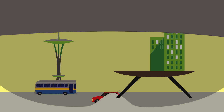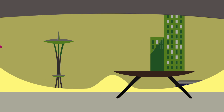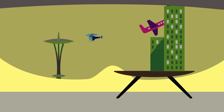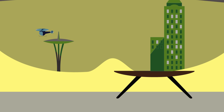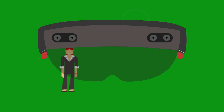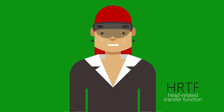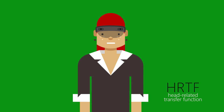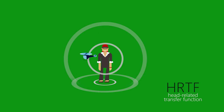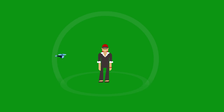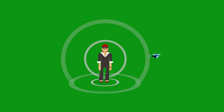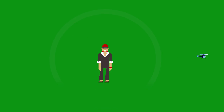HoloLens devices have a field of view directly in front of the viewer. Holograms can only appear within that line of sight. But the speakers on HoloLens use HRTF, or Head-Related Transfer Function Audio, to simulate sound coming from distances and directions. This makes the mixed reality environment more realistic.